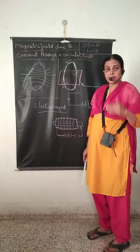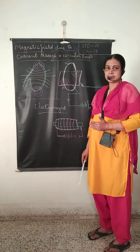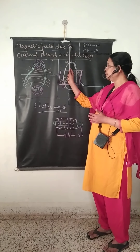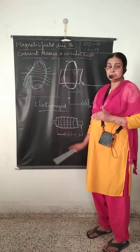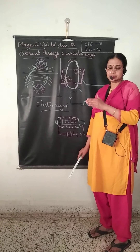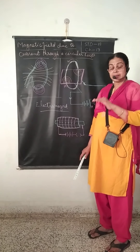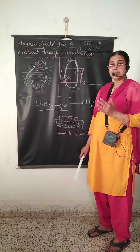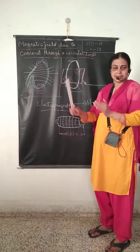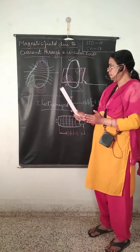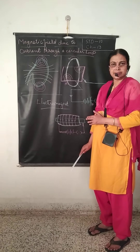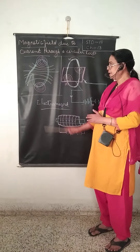We have already discussed the magnetic field due to a current through a straight conductor, a straight wire. Now suppose if the straight wire is bent in the form of a loop, how the magnetic field is produced.